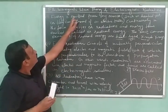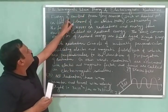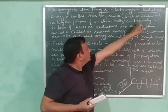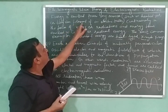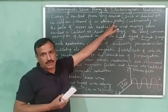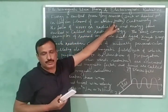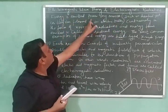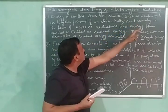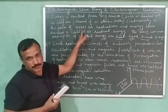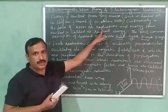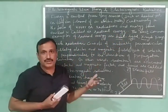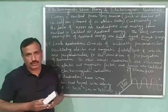So, let us start. The first postulate of this theory is energy is emitted from any source. The source could be your heated rod or the tungsten filament of an electric bulb or other sources can also be there like sun or any other source. So, the energy is emitted from any source continuously in the form of waves or radiations. And the energy emitted in the form of these radiations is called as radiant energy.